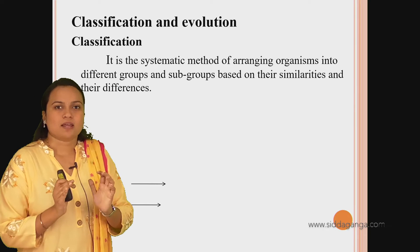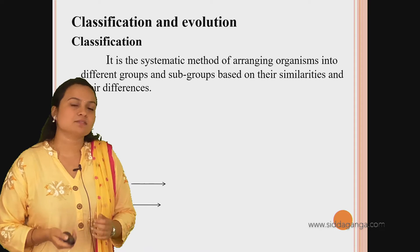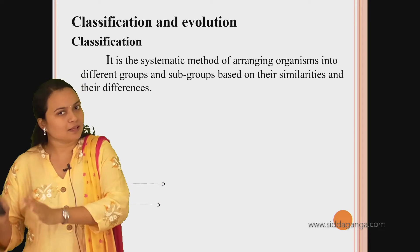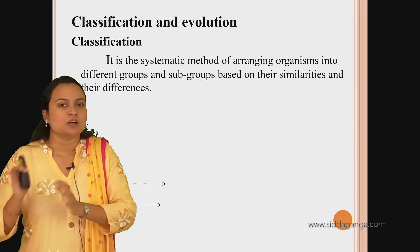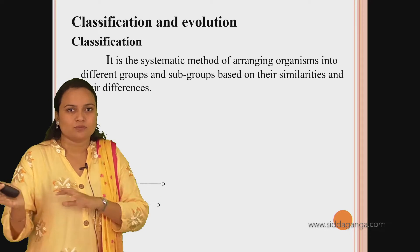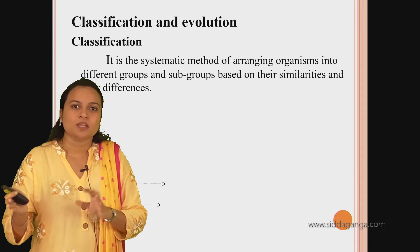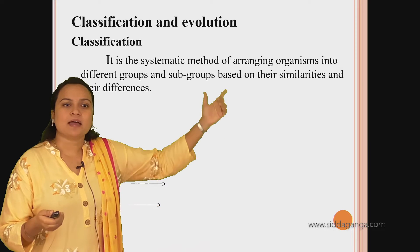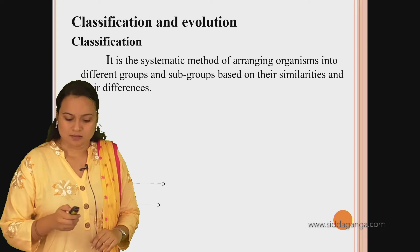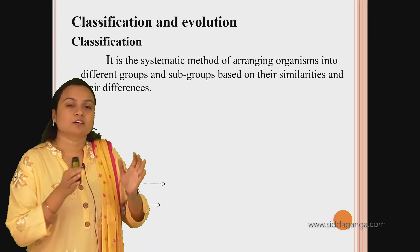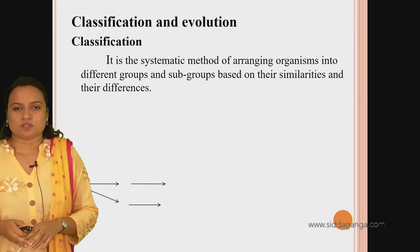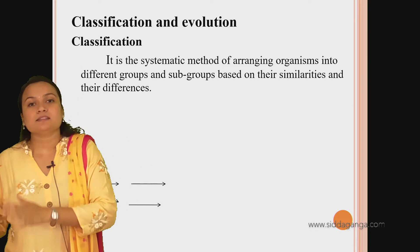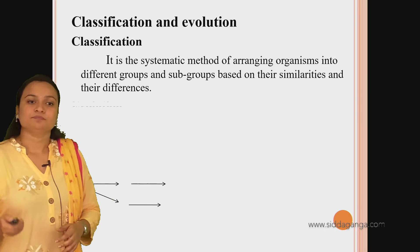An organism will have some characters, and if you compare one organism with another, you will find some similarities between both of them and some dissimilarities. Based on that, the classification is done - that is, the grouping of organisms is done. And this group can be again subgrouped.